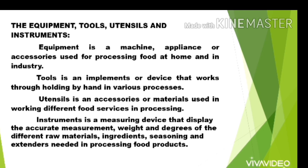Equipment is a machine, appliance, or accessory used for processing food at home and in industry. Tools is an implement or device that works through holding by hand in various processes. Utensils are accessories or materials used in working different food services in processing. Instruments are measuring devices that display the accurate measurement, weight, and degrees of different raw materials, ingredients, seasoning, and extenders needed in processing food products.